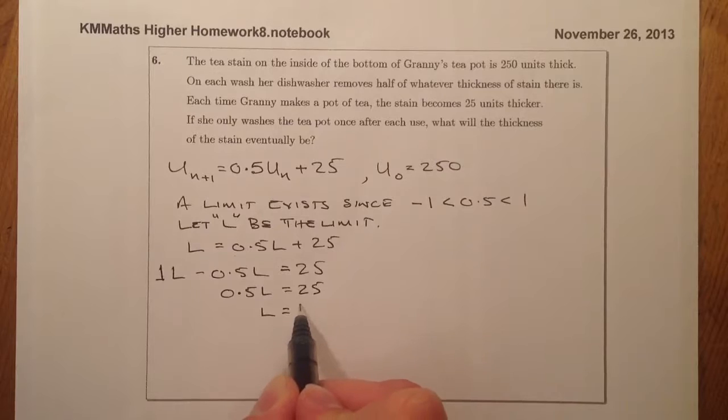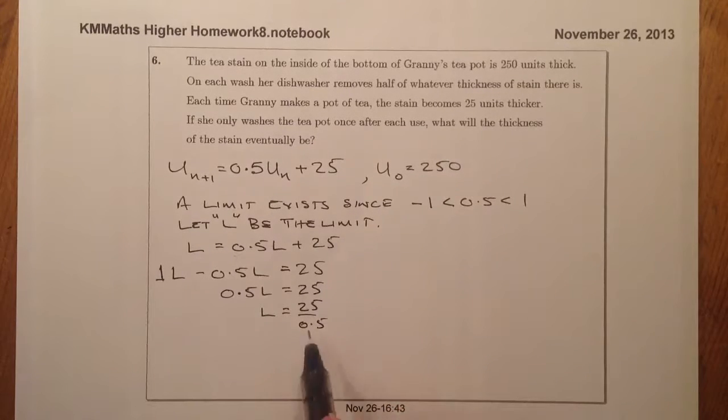To work this out, all I'll do is divide 25 by a half. And if I can work that through, I should find out my limit is going to be equal to 50 units.